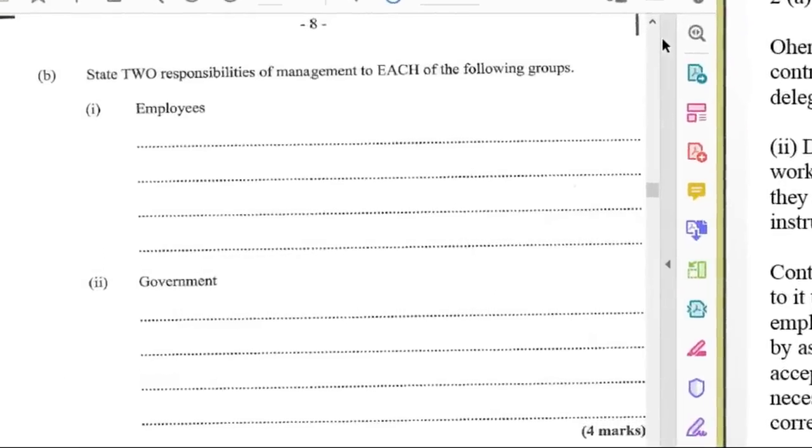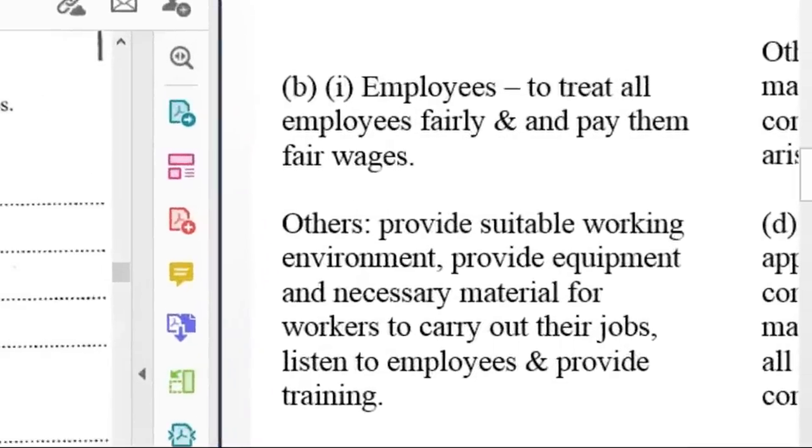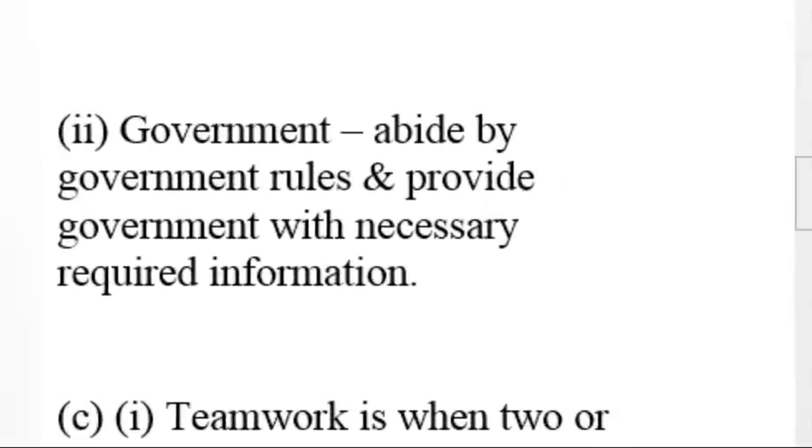2B says state two responsibilities of management to each of the following groups: employees and government. For employees, management is to treat all employees fairly and to pay them fair wages. Other responsibilities include provide suitable working environment, provide equipment and necessary material for workers to carry out their jobs, and listen to employees and provide necessary training. Management's responsibility to government includes abiding by government rules and provide government with necessary required information.